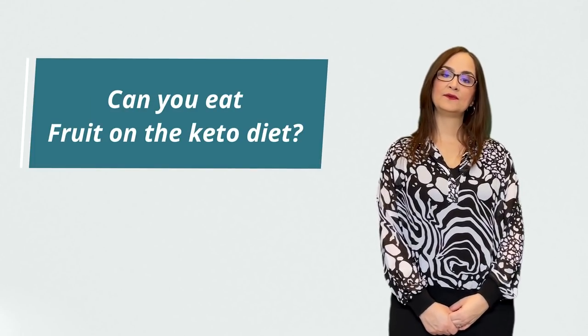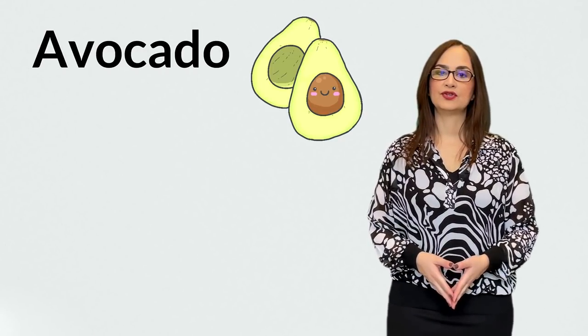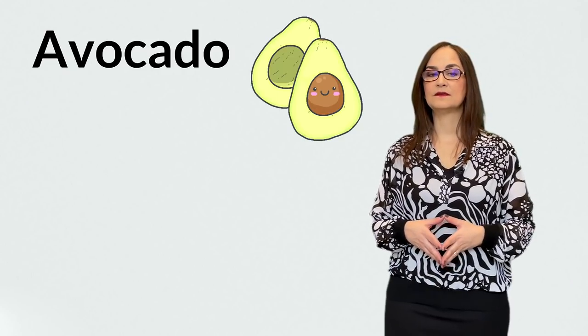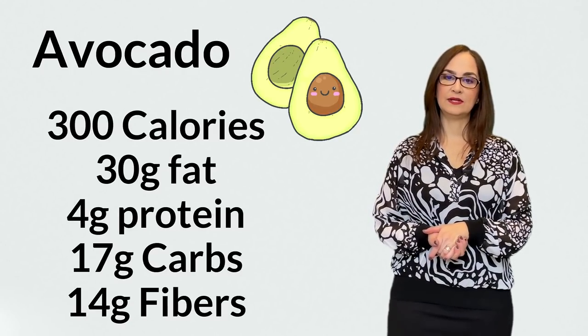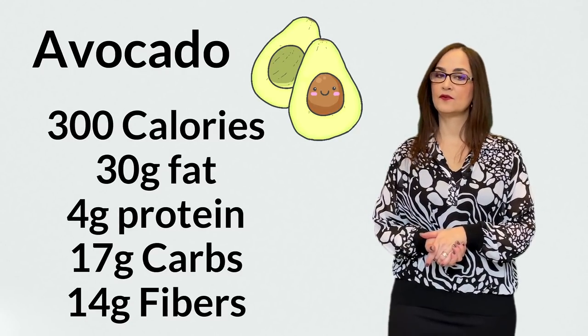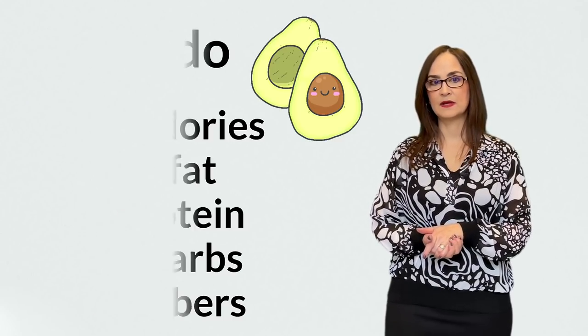Can you eat fruit in the keto diet? Avocados are allowed, but with moderation, because they are mainly composed of fats. One avocado contains around 300 calories, 30 grams of fat, 4 grams of protein, 17 grams of carbohydrates, and 14 grams of fibers. Other fruits are very limited in quantity.